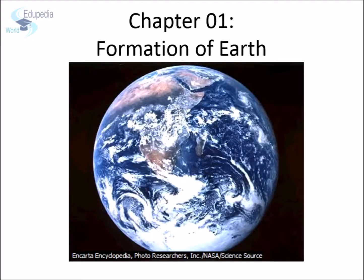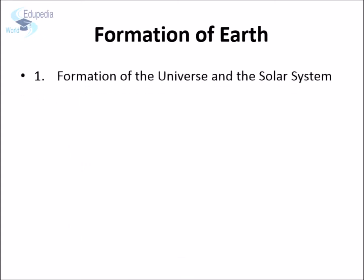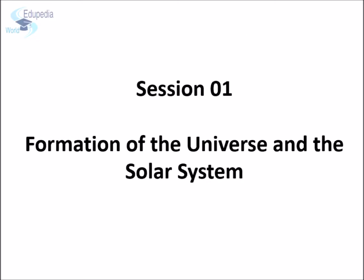Our fourth chapter of Grade 9, Formation of Earth, has been divided into four topics: formation of the universe and the solar system, planets of our solar system, shape and size of Earth, and the Sun, Earth, and Moon. In this session we are going to focus on the formation of the universe and our solar system.